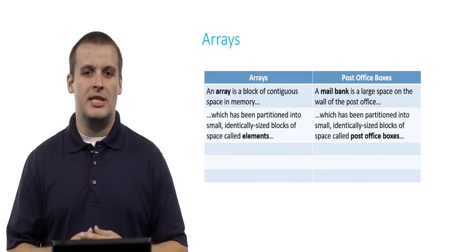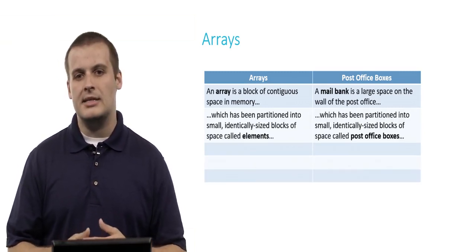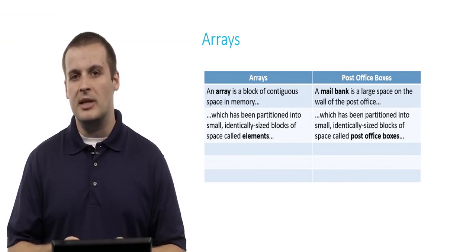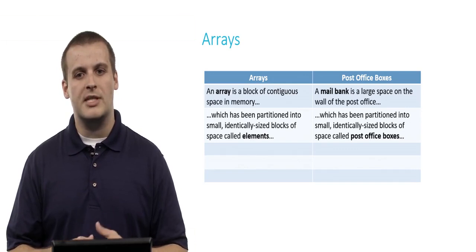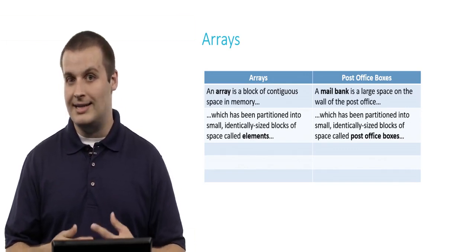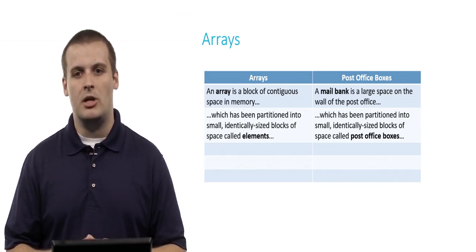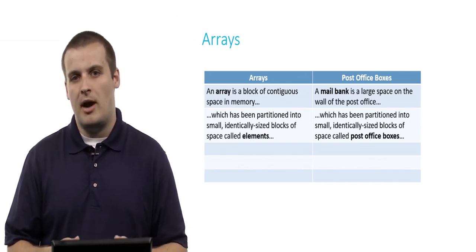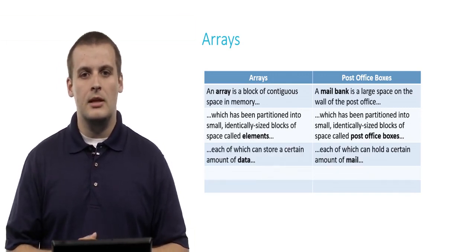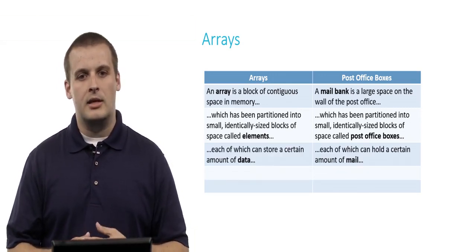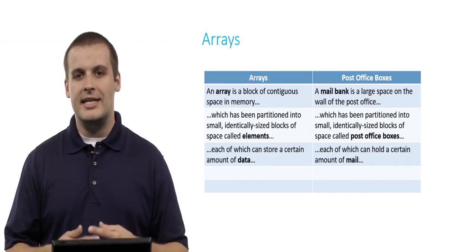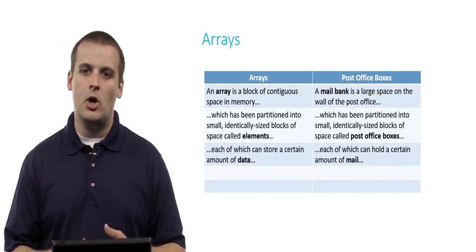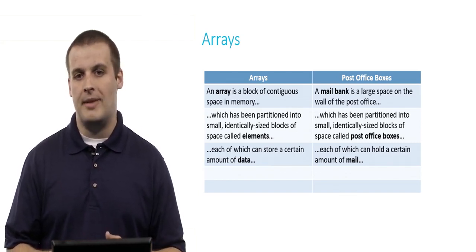Arrays have been partitioned into small, identically sized blocks of space, each of which is called an element, in the same way that the wall at the post office has been partitioned into small, identically sized blocks of space, which we call a P.O. box. Each element of the array can store a certain amount of data, just as each post office box is able to hold a certain amount of mail.